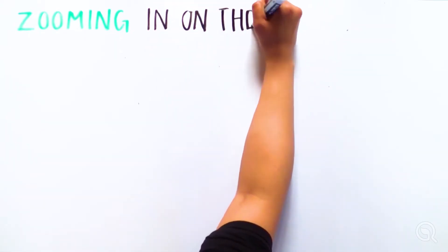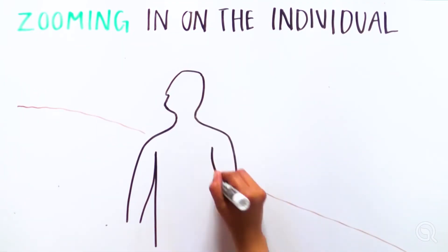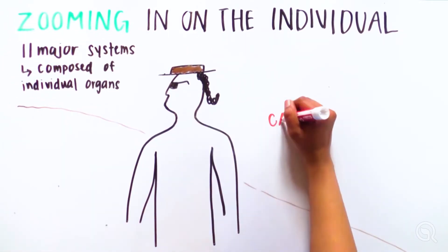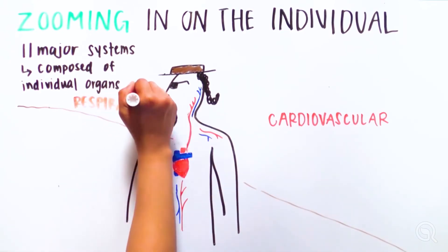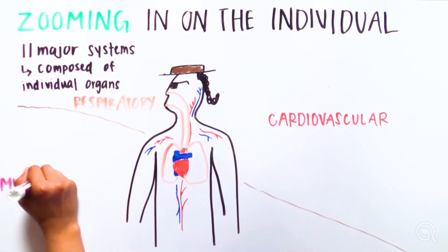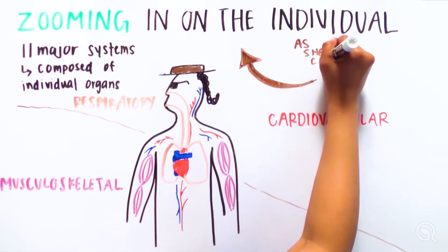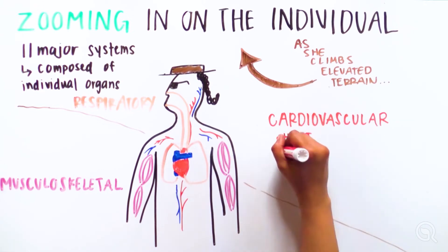Let's zoom in and look at the structure-function relationship within an individual. Her body is composed of 11 major organ systems, including cardiovascular, musculoskeletal, and respiratory systems. Each body system has a structure of organs that work together to carry out functions. As she climbs elevated terrain, her cardiovascular system works to increase her heart rate.